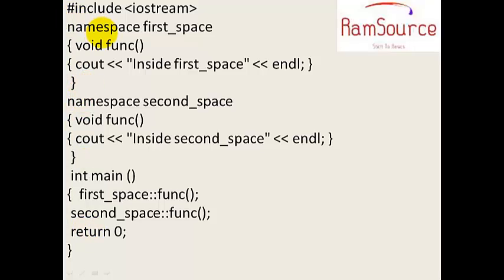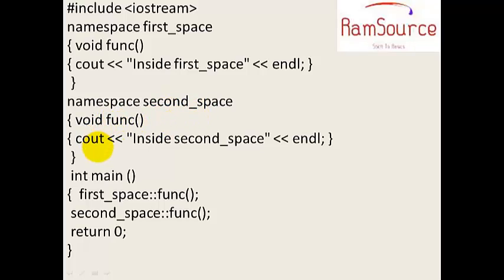And namespace first_space is my namespace name. That's why I have a void function. The function one is defined with a print statement. And namespace second_space — this is my second namespace — with a similar function defined in the main core function.